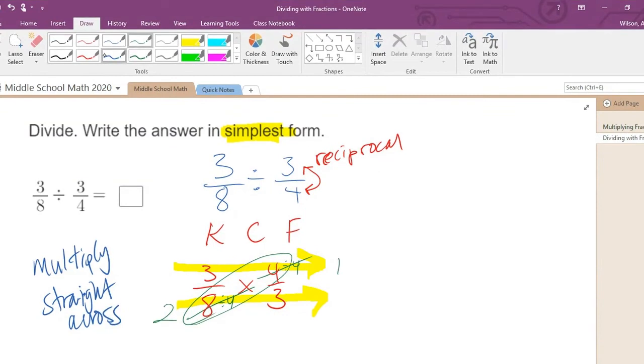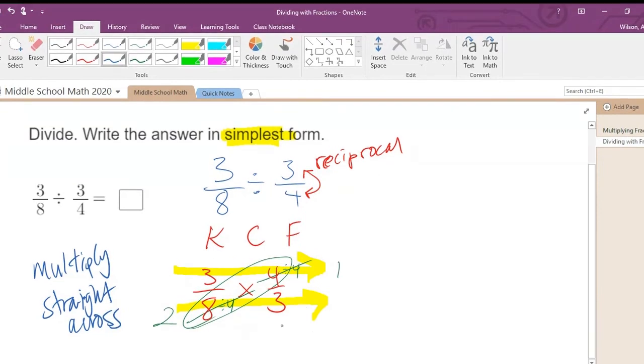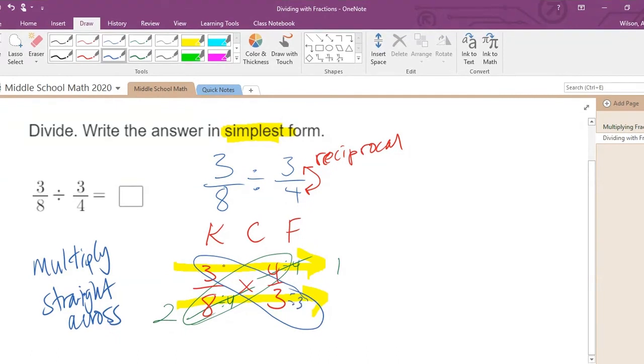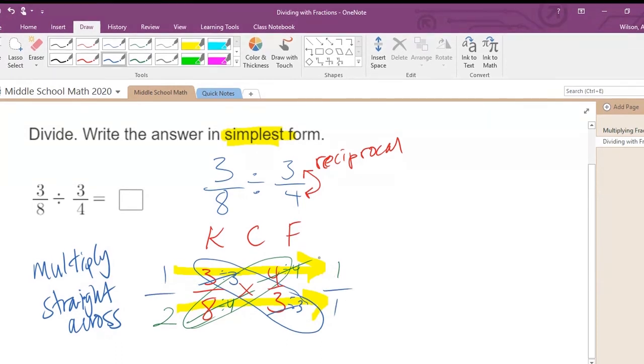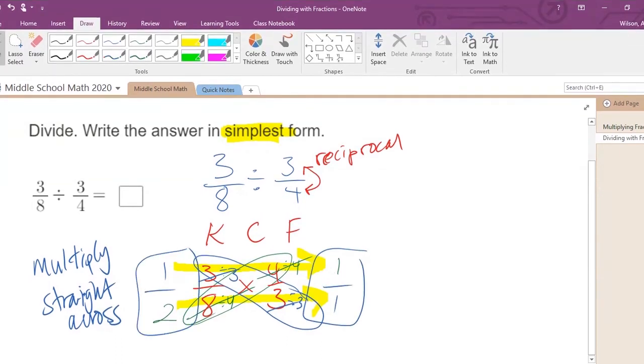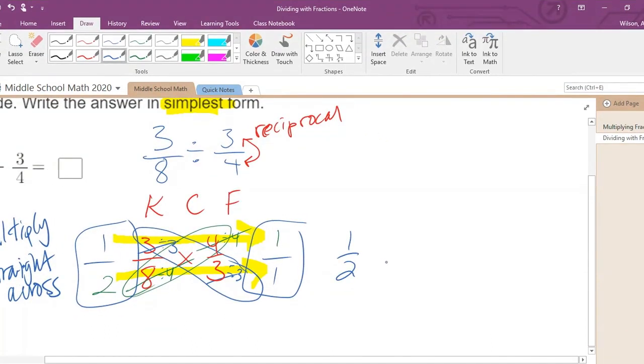And then you should also notice the threes are both divisible by three. They share a common factor of three. So that turns into a one, and this also turns into a one. Now you're looking at our new fractions, which are way simpler to deal with: one half times one over one.